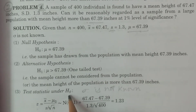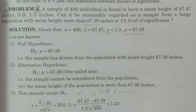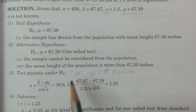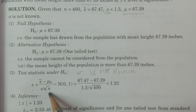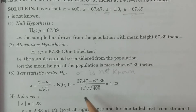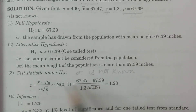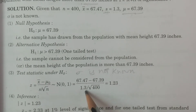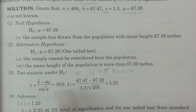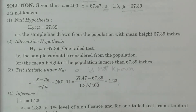Third point: test statistic under H0. Sigma is not known, so we use case 2. The formula for the test statistic under H0 is Z equals X-bar minus mu-zero divided by S divided by root N. Sigma is estimated with S. Substituting values: X-bar 67.47 minus mu-zero 67.39, divided by S 1.3 divided by square root of N 400, giving Z equal to 1.23.